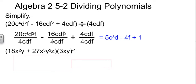16 divided by 4 is 4. C divided by C cancels, D divided by D cancels, so F² over F¹ becomes just negative 4F. And then here, everything matches — something divided by itself is 1.